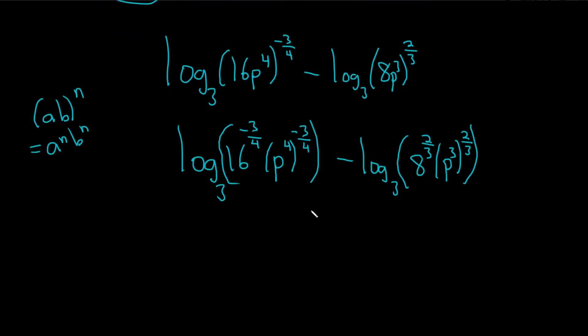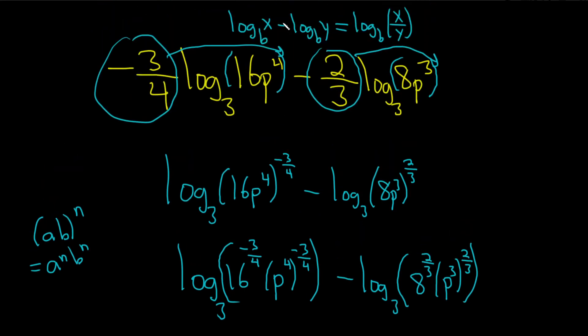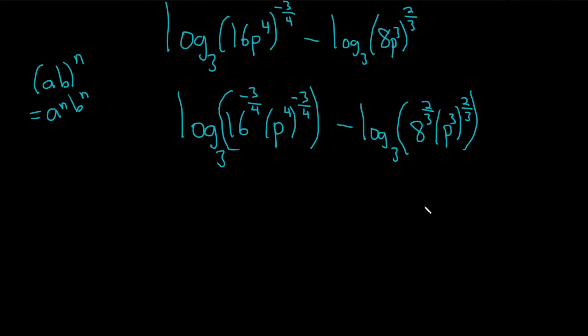So let's go ahead and simplify all of this before we use the quotient rule. Remember, the quotient rule says it's just going to be log of this piece here divided by this piece here. But let's go ahead and clean up these inside pieces, and then use our quotient rule.